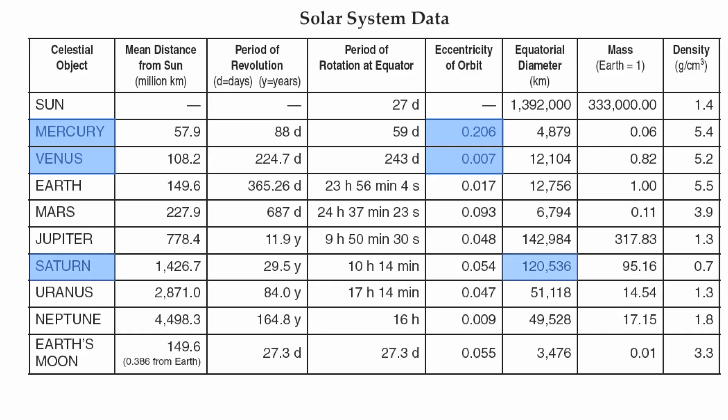Next, if we have Saturn and we want to know Saturn's equatorial diameter, in this case it would be 120,536 kilometers.